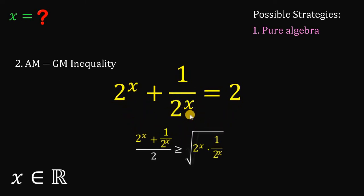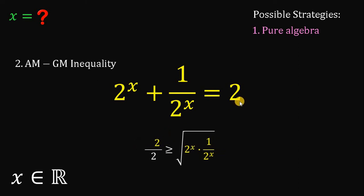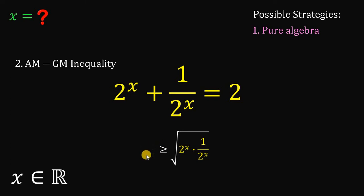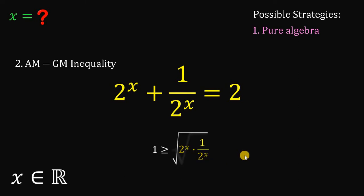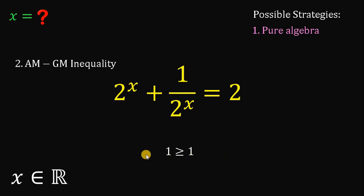We know the value of 2 raised to x plus 1 over 2 raised to x — this is just 2. And 2 over 2 is just 1. Now, 2 raised to x times 1 over 2 raised to x is just 1 also, and the square root of 1 is just 1. Therefore, the left-hand side and the right-hand side are equal.